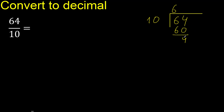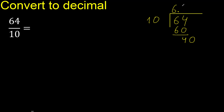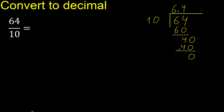There is no number that goes down, therefore complete with 0 here, with a decimal point. 40 — 10 multiplied by which number? Multiplied by 5 is 50, is greater. Multiplied by 4 is 40. Subtract 0. Remainder is 0, therefore finish.